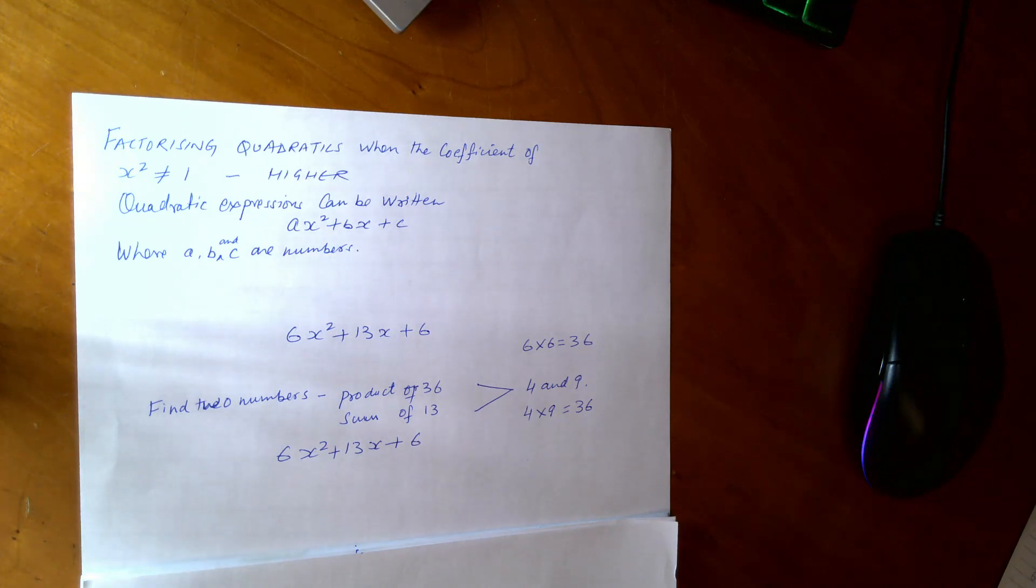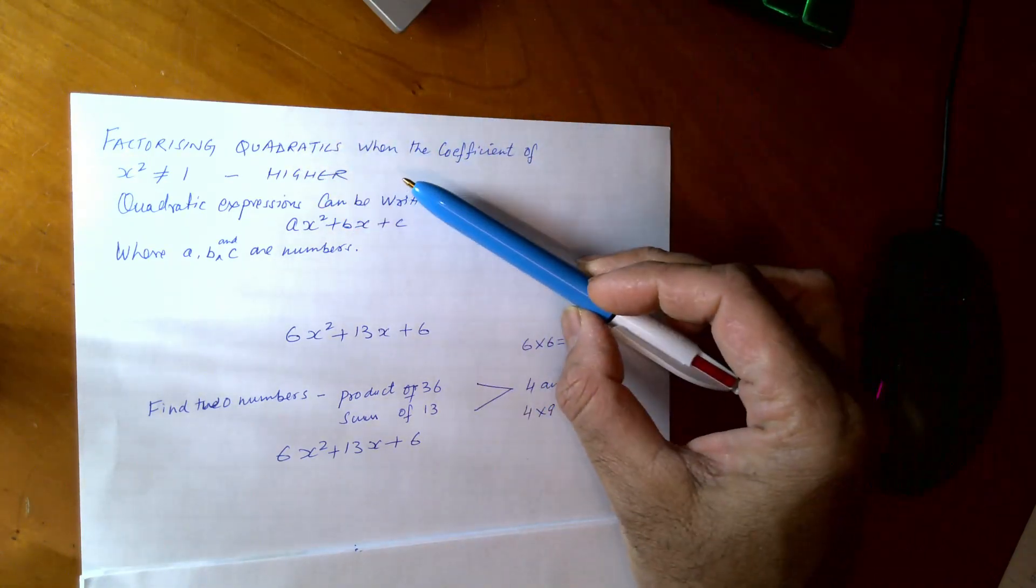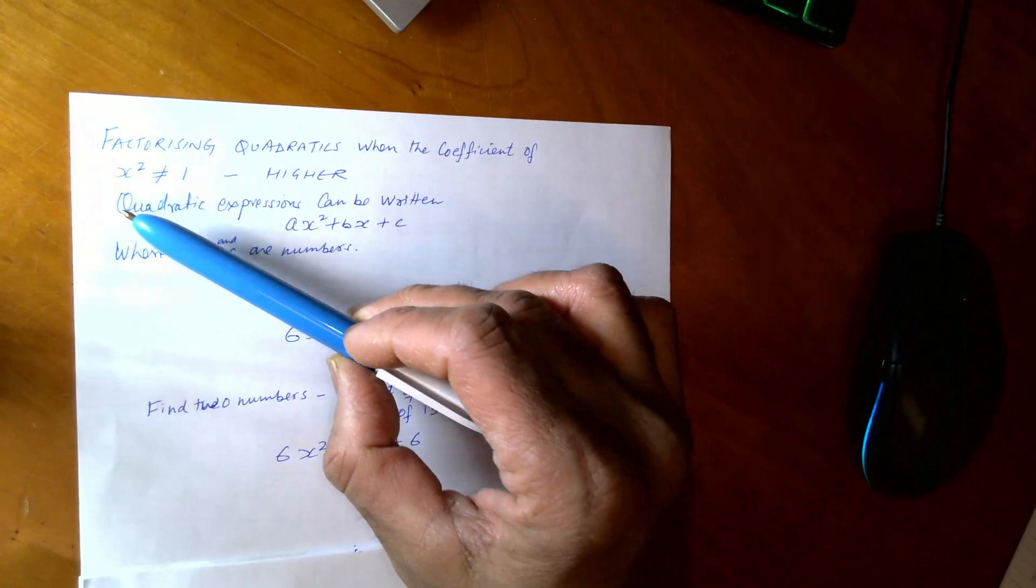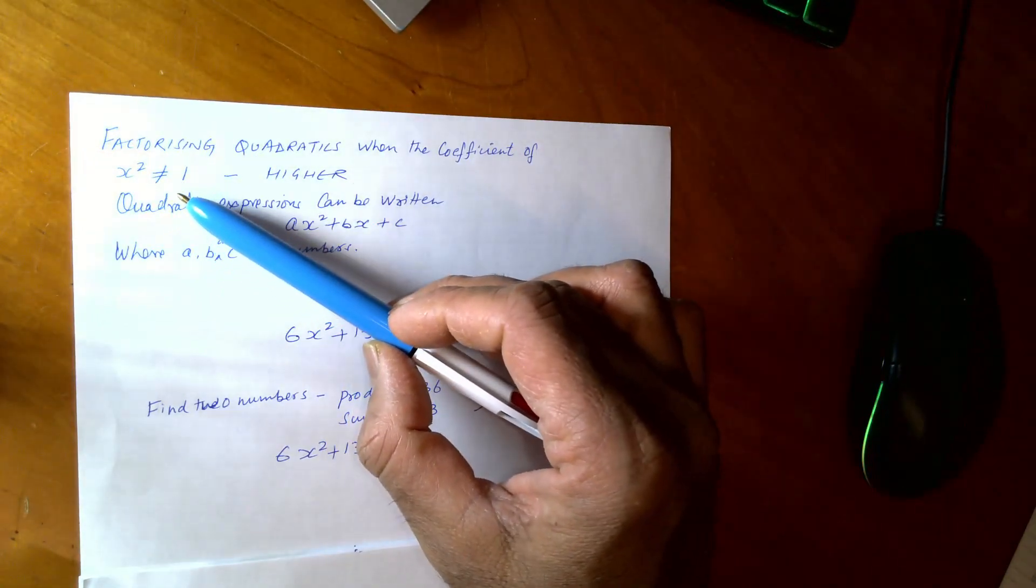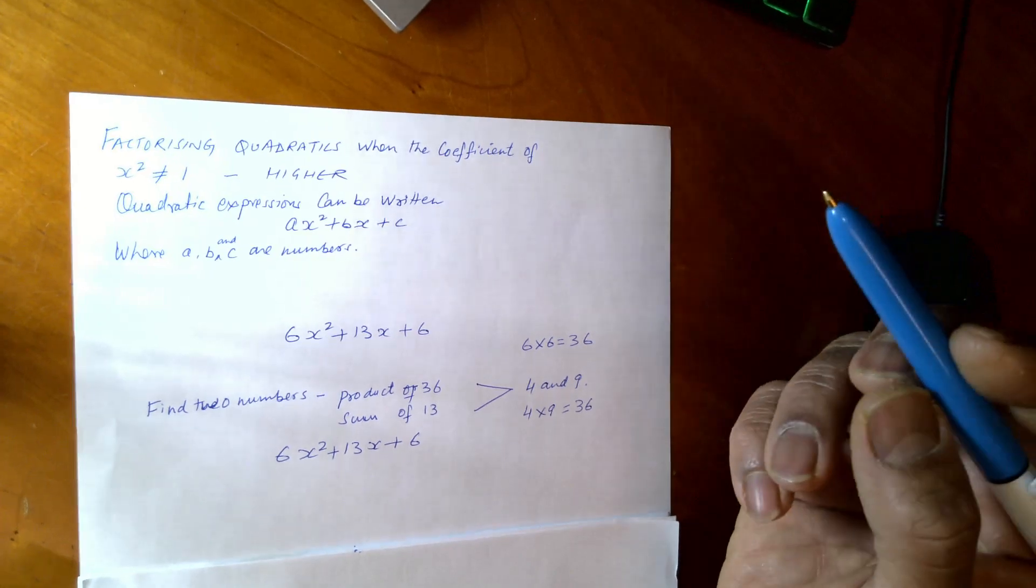In this video I will explain factorizing quadratic equations when the coefficient of the x squared is not equal to 1. So I explain to you what this means.